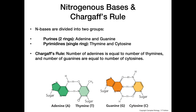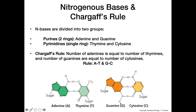Chargaff's rule tells us that the proportion of adenine in a DNA molecule should be equal to the proportion of thymine, because adenine and thymine pair together in DNA molecules. The same goes for guanine and cytosine — the relative amount of guanine should be roughly equal to cytosine because they pair in a one-to-one fashion. Between adenine and thymine there are two hydrogen bonds, while between guanine and cytosine there are three hydrogen bonds holding them together.